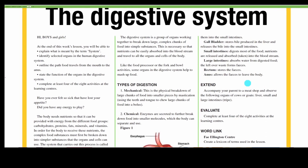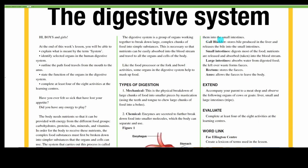Stomach stores and churns the food until it forms a slushy liquid called chyme. Pancreas makes digestive enzymes and releases them into the small intestine. The gallbladder stores bile produced in the liver and releases bile into the small intestines. Small intestines digest most of the food, and nutrients are released and absorbed into the bloodstream. Large intestines absorb water from the digested food, and leftover waste forms feces. The rectum stores the feces, and the anus allows feces to leave the body.